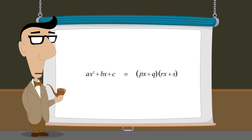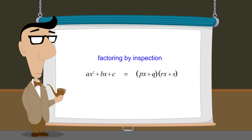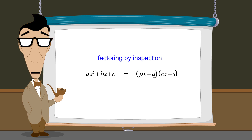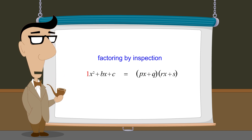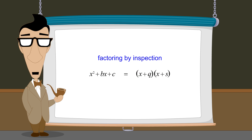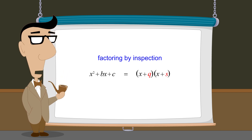In the previous lecture, we introduced a method for factoring quadratics using a trial-and-error process called factoring by inspection. We saw that this process is simplest when the coefficient of x-squared is one, since in that case the x-coefficients p and r in the linear factors will also be one. Therefore, it will only be necessary to determine the values of two constants q and s, given the values of b and c.